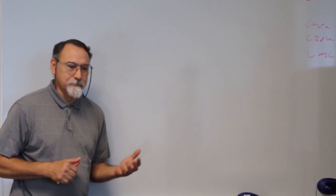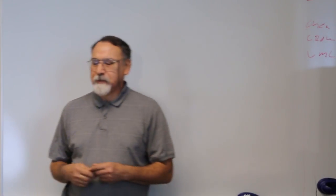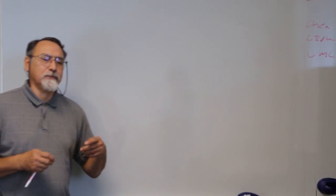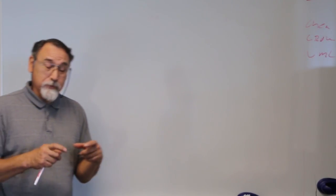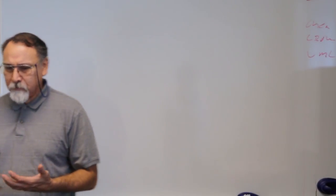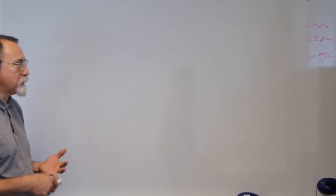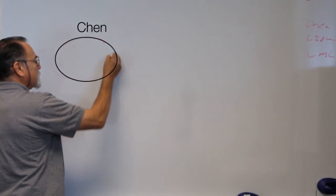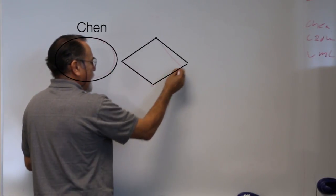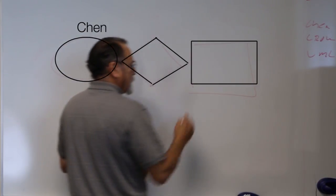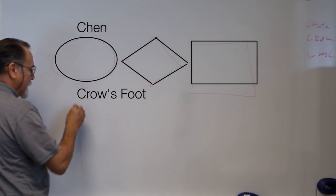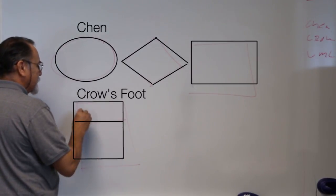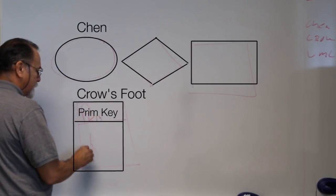As in any graphical representation, there is a tendency to use symbols. Just as you know what a tub or an electrical outlet is when you see it drawn, when you're doing data flows, the Chen model, the Crowfoot model, and the UML have unique identifiers. The Chen model uses the oval, the diamond, and the rectangle. The Crowfoot tends to center around the box or rectangle, where you have the primary key and the data that supports it. And then you have the UML process.